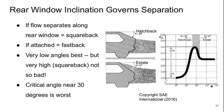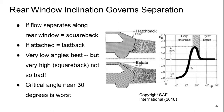The inclination angle of the rear window governs the nature of the separation. If the flow separates along the rear window it's a square back; if it's attached, it's a fast back. Very low angles are best — like a very mild hatchback — though at the extreme end it again looks like a square back, which is not so bad either. At very high angles the drag coefficient saturates around 0.4, while a smooth hatchback might achieve around 0.34. There is a spike in drag coefficient right around 30 degrees, which is to be avoided.